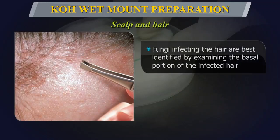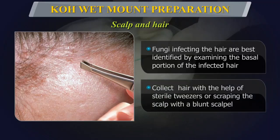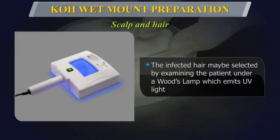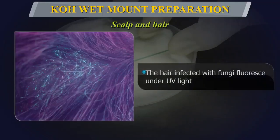Fungi infecting the hair are best identified by examining the basal portion of the infected hair. Collect by removing dull broken hair from the margin of the lesion with sterile tweezers or by scraping the scalp with a blunt scalpel. The infected hair may be selected by examining the patient under a Woods lamp, which emits ultraviolet light — hair infected with fungi fluoresces under ultraviolet light.